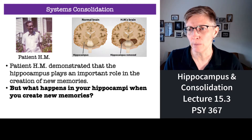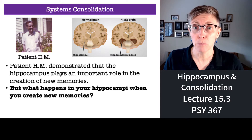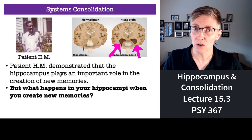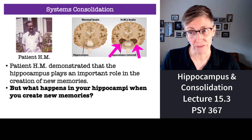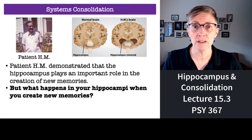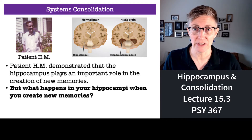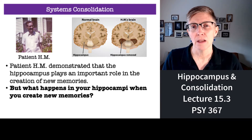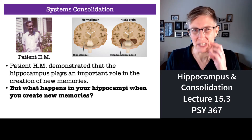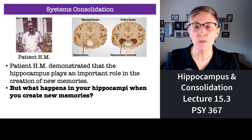Patient H.M. had his hippocampus removed from both of his hemispheres, which you can see in this picture. After his hippocampi were removed, he lost the ability to form new explicit memories. Originally people wondered whether the memories themselves are stored in the hippocampus, but we now know that's not true.